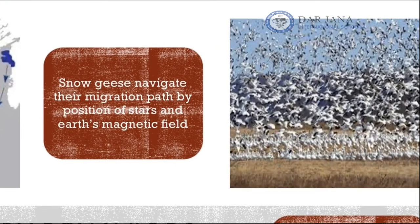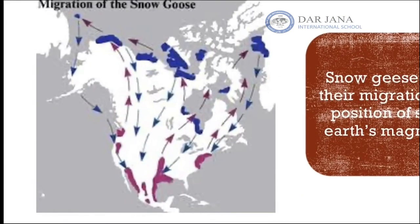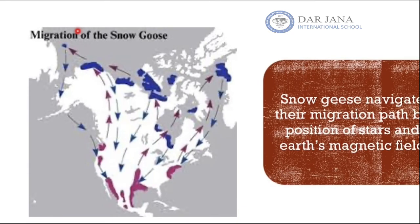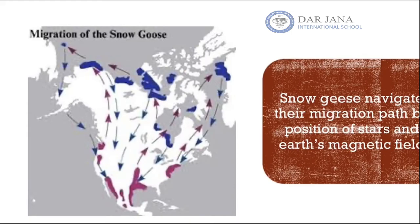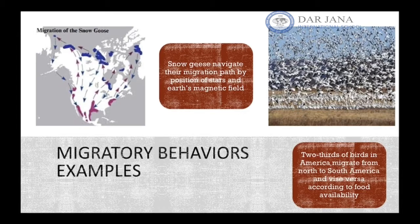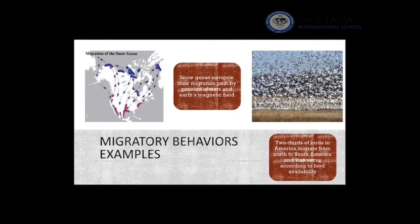How do animals know how to migrate? Many animals, such as snow geese, know how to migrate from north to south or vice versa by using the position of stars. After repeated use, they develop their own navigation system. They may also use the Earth's magnetic field. Two-thirds of birds in America travel from North America when it is cold to South America where it is warm, reversing when it is winter in the south.